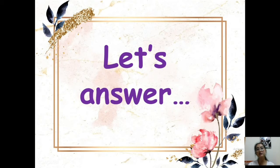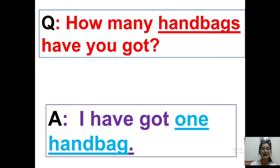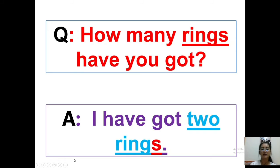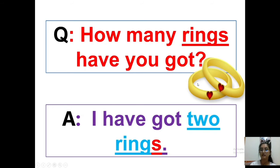Okay everybody, those are the different examples of accessories. Now let's answer an example question: how many handbags have you got? In here we have only one. The answer would be: I have got one handbag. Another example — the question is: how many rings have you got? We have one, two. Answer: I have got two rings. There are two, so we need to put S.